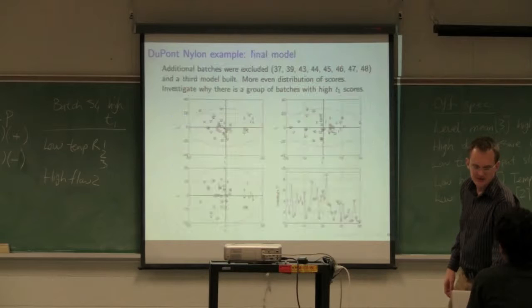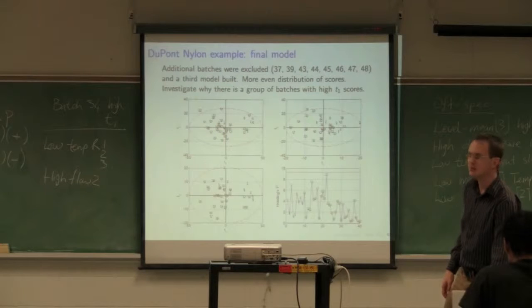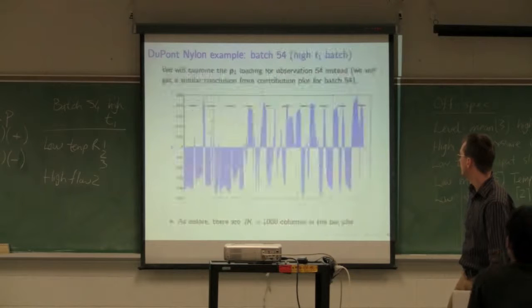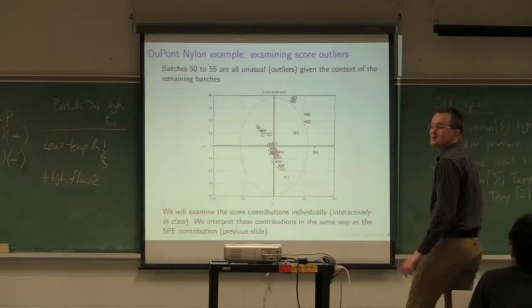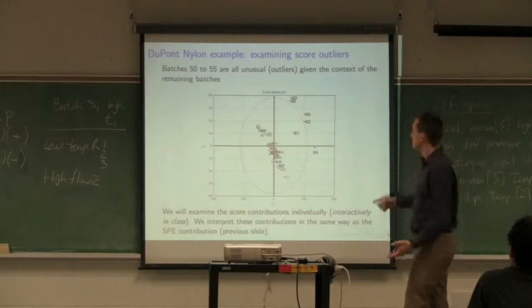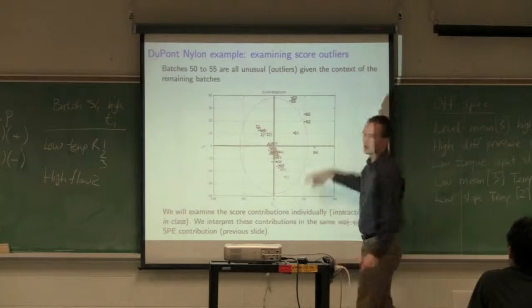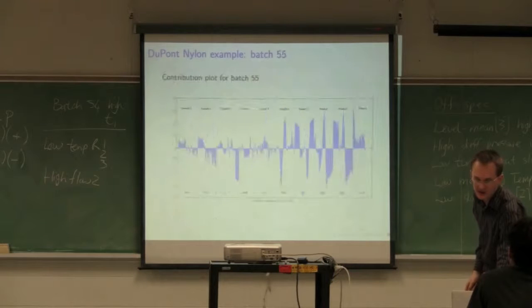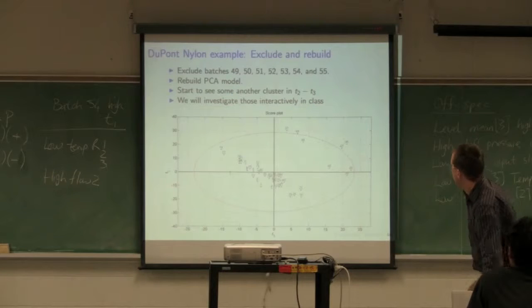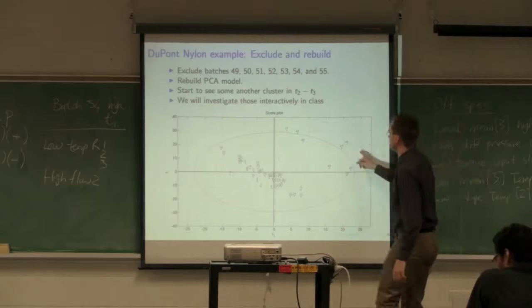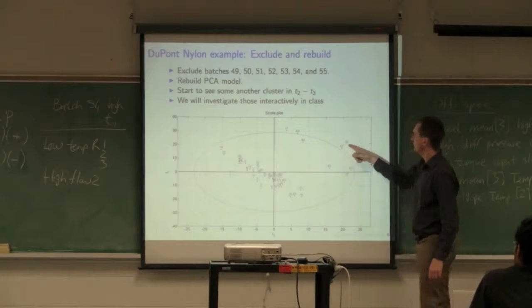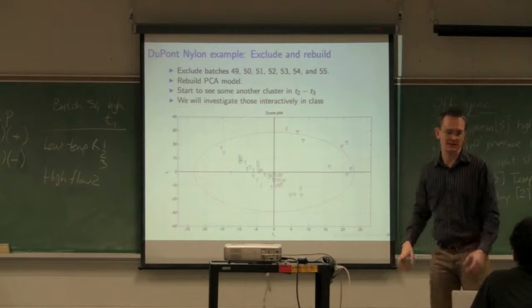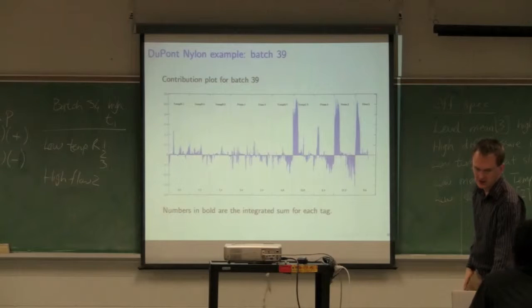Where we ended up with this case study was DuPont had discovered two major types of problems with this batch system. These particular batches have a problem with control. Then there's another cluster apparent - batches 37, 38, 44, 46, 47 - these had a different type of problem.